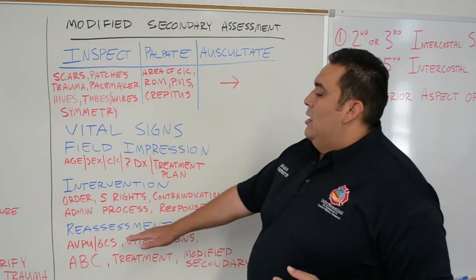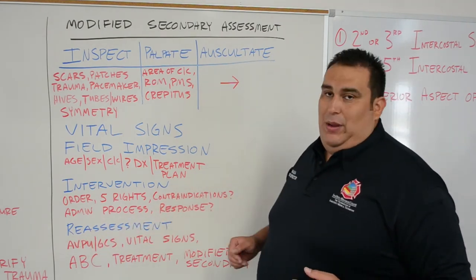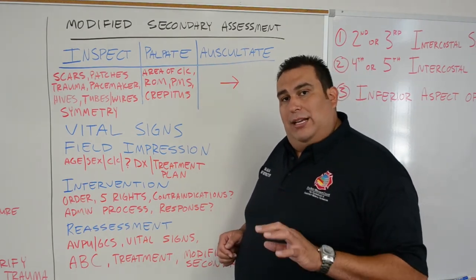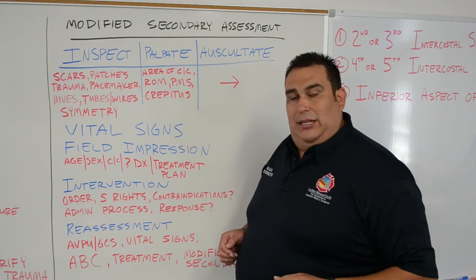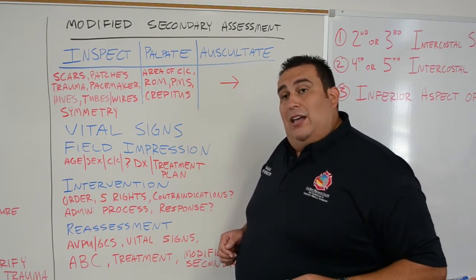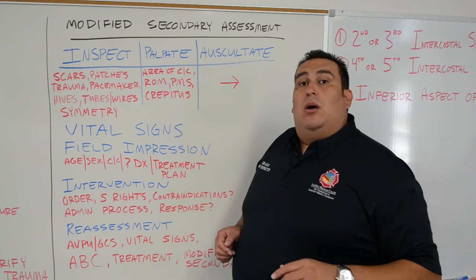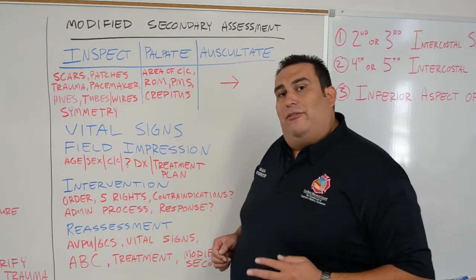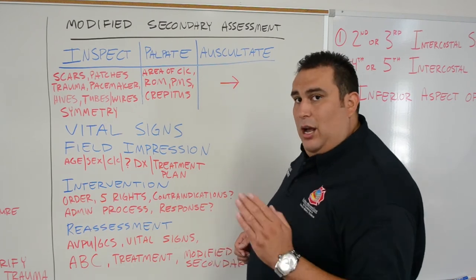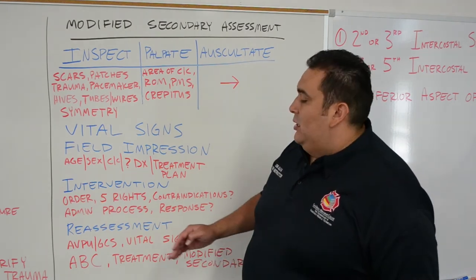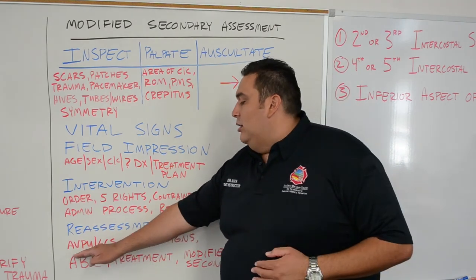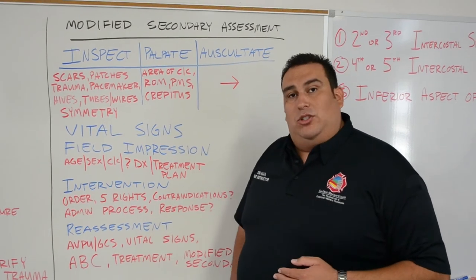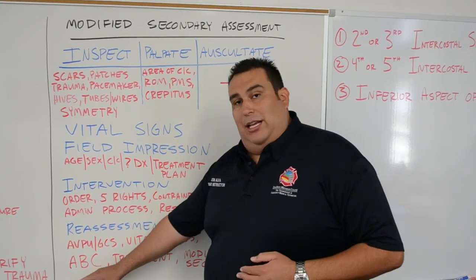Once I get my intervention in, I'm going to go ahead and reassess my patient. For any stable patient, we're going to reassess at least every 15 minutes. If our patient is unstable, we're going to reassess every five minutes at minimum — if not sooner. Our reassessment is going to include several items: we're going to look at AVPU, how alert the patient is, and whether that has changed. We're going to reassess GCS and reassess our ABCs.